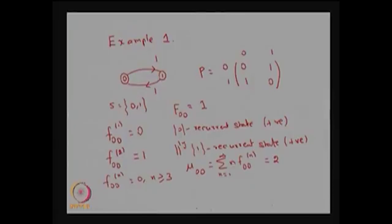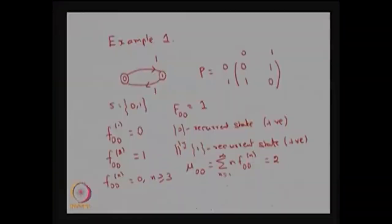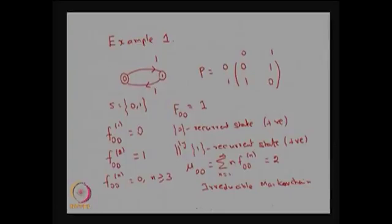Both states are communicating, so we have one class with states {0, 1}, and the state space is also {0, 1}. We are not able to partition the state space into more than one communicating class. Therefore, this Markov chain is irreducible — because both elements are communicating with each other and we have only one closed communicating class.